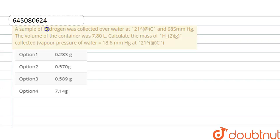Here the question is: A sample of hydrogen was collected over water at 21 degrees Celsius and 685 mm Hg. The volume of the container was 7.80 liter. Calculate the mass of hydrogen collected. So here we have to find out the mass of hydrogen.